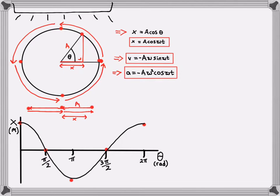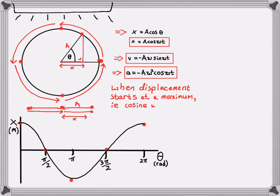These are the formulas when displacement starts at a maximum, giving a cosine wave. Depending on the question, you need to decide whether your system starts oscillating at zero displacement or maximum displacement — or equivalently, whether your displacement-time graph looks like a sine wave or a cosine wave — to determine which formulas to use for displacement, velocity, and acceleration.